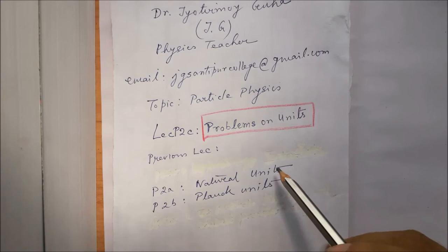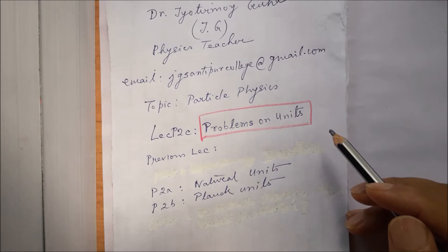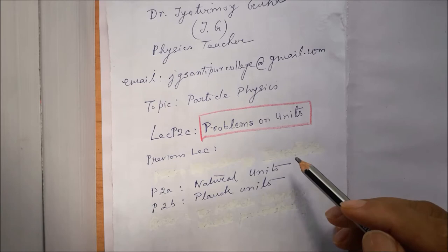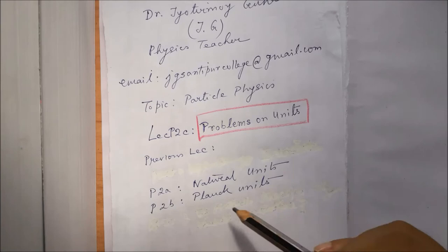What we'll do now is a brief discussion on problems of units. First we'll say a few words about Planck units, natural units, and then we'll talk about the astronomical system of units, and then we'll be speaking about Heaviside-Lorentz units, and then we'll do certain problems to end up this lecture. In lecture P2A we discussed about natural units.